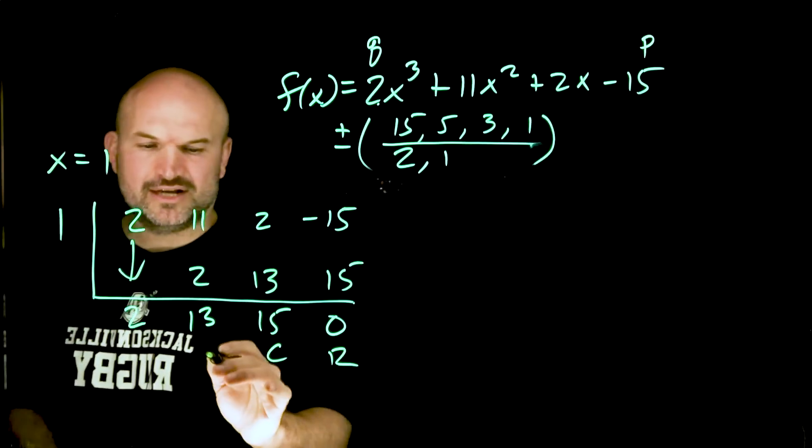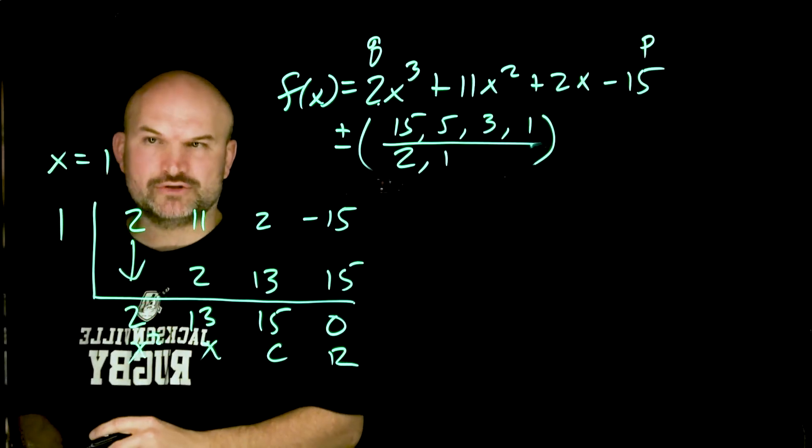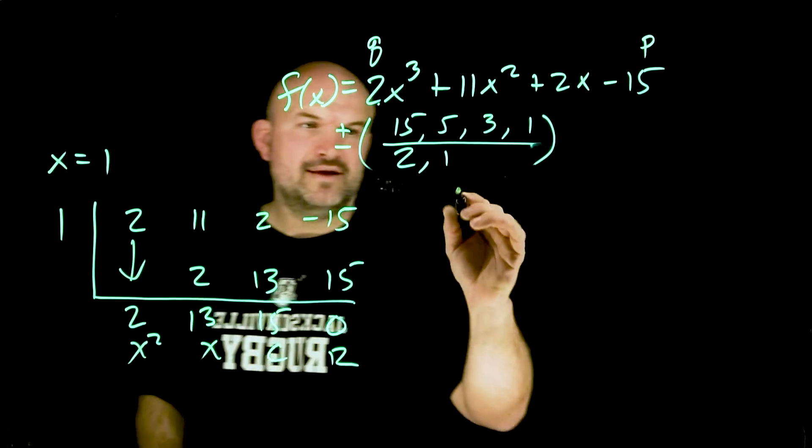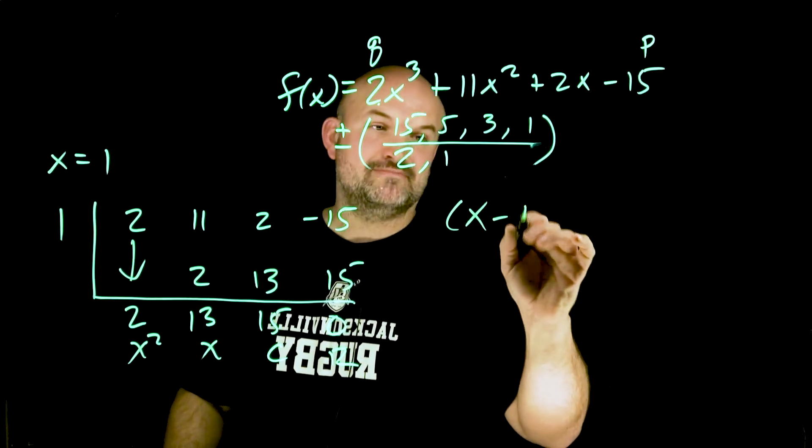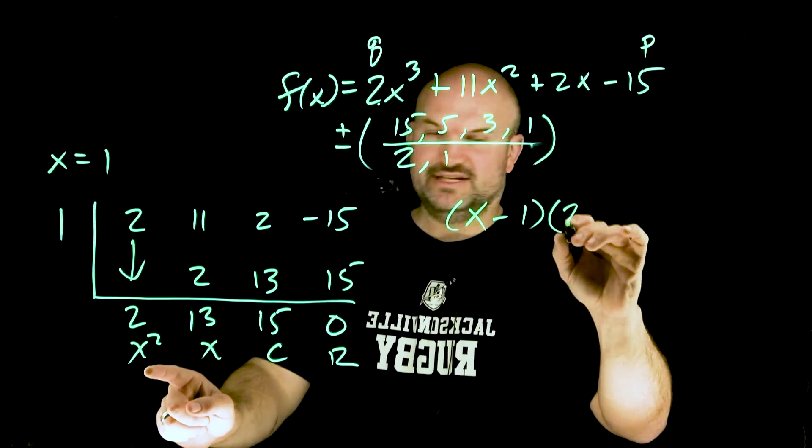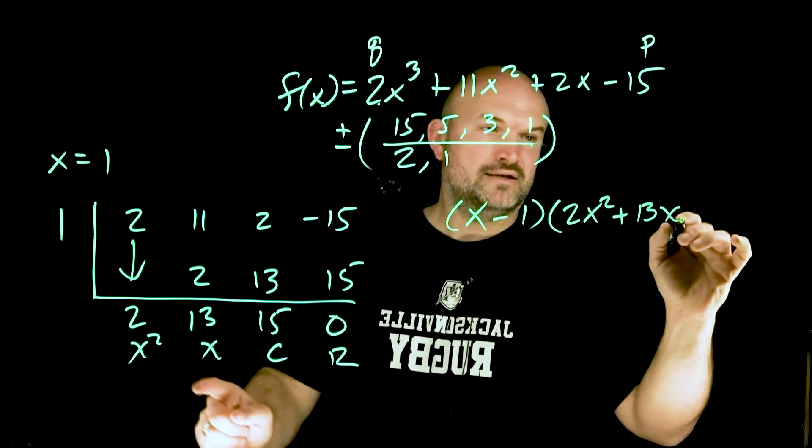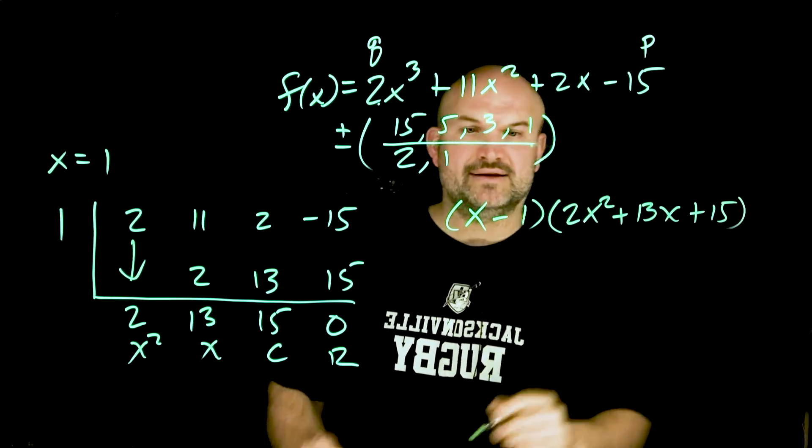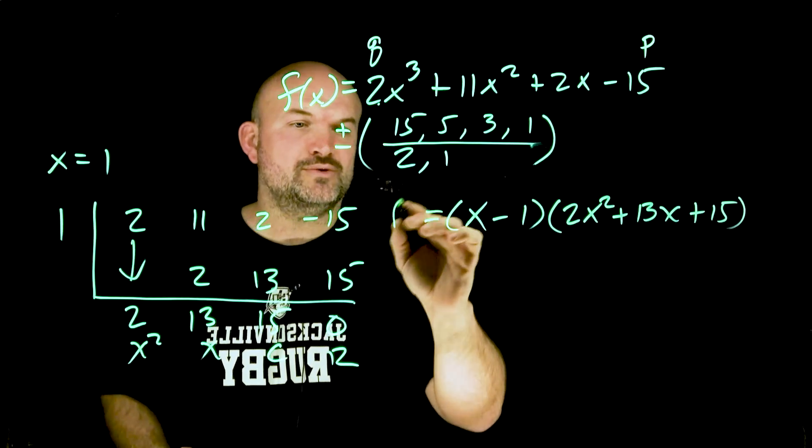This is our remainder. This is going to be our constant, coefficient of our linear term, coefficient of our quadratic term. If x equals 1 is a zero that means x minus 1 would be a factor times 2x squared plus 13x plus 15. That is equal to f of x.